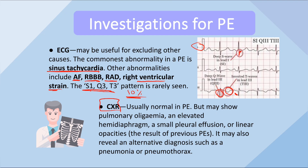Chest X-ray is usually normal in pulmonary embolism. Sometimes it might show pulmonary oligemia or an elevated hemidiaphragm. However, you should still perform a chest X-ray in order to find an alternative diagnosis. For example, if you are suspecting PE but the chest X-ray shows pneumonia or pneumothorax, then you change your clinical impression.